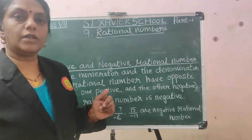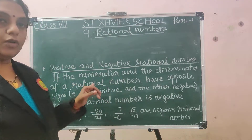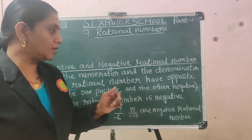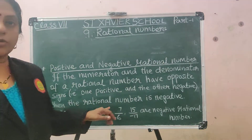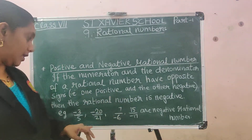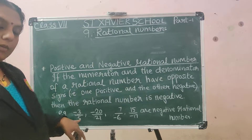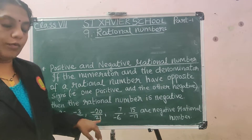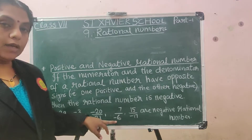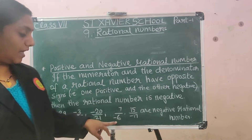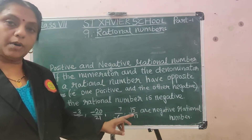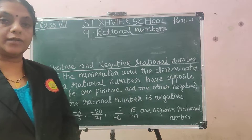Now for negative rational numbers: if the numerator and denominator have opposite signs — one positive and the other negative — then the rational number is a negative rational number. Examples: minus 3 by 5, minus 20 by 21, 7 by minus 6 — having the negative sign in the denominator is also a negative rational number — and 15 by minus 17.